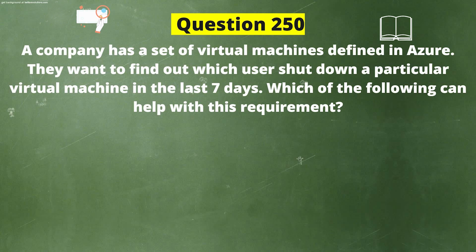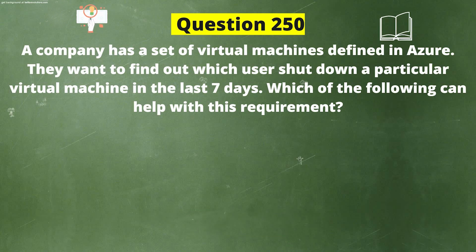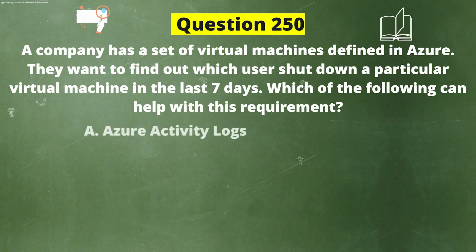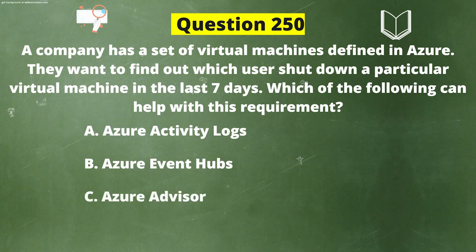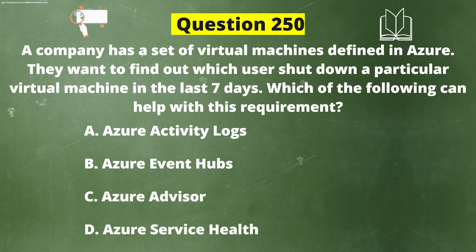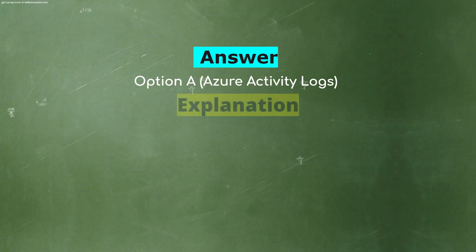Next question. A company has a set of virtual machines defined in Azure. They want to find out which user shut down a particular virtual machine in the last seven days. Which of the following can help with this requirement? Option A: Azure Activity Logs. Option B: Azure Event Hubs. Option C: Azure Advisor. Option D: Azure Service Health. The correct answer is Option A, Azure Activity Logs.